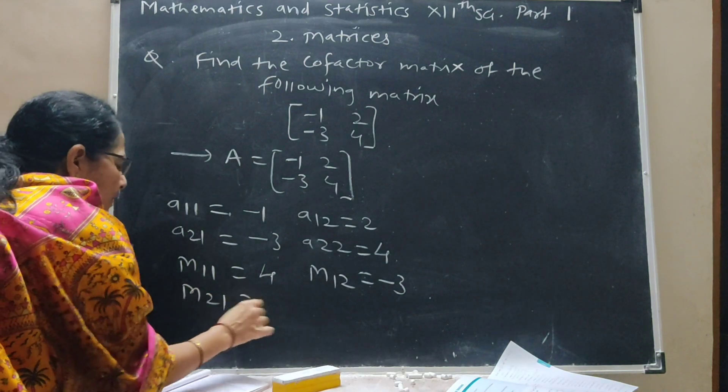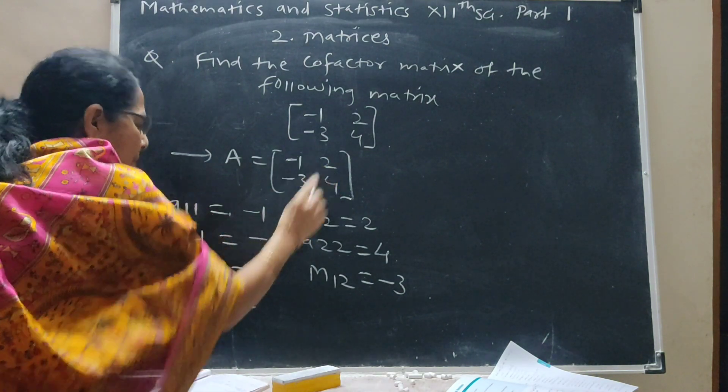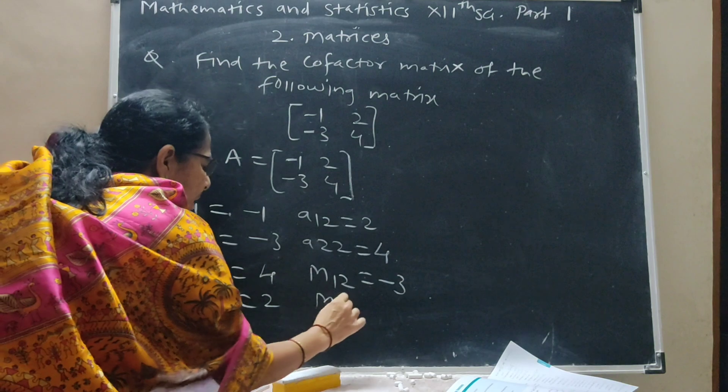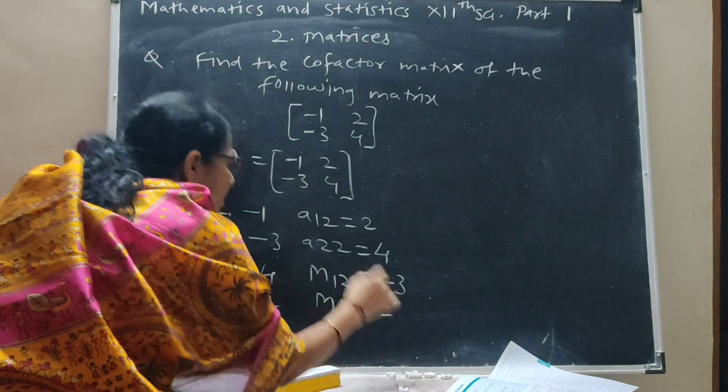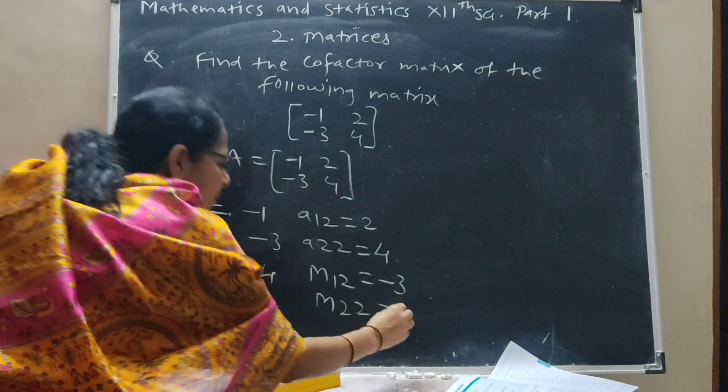M21, second row first column gives 2. M22, second row second column gives minus 1.